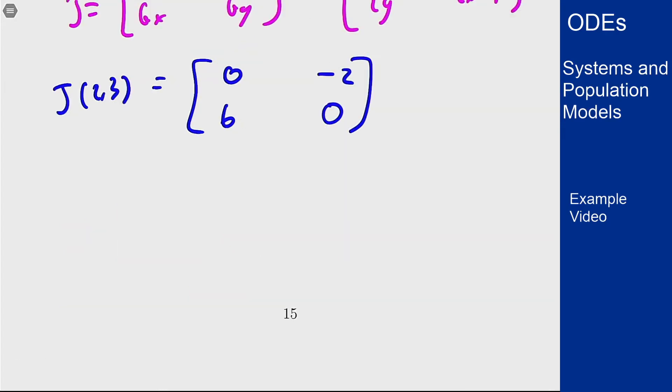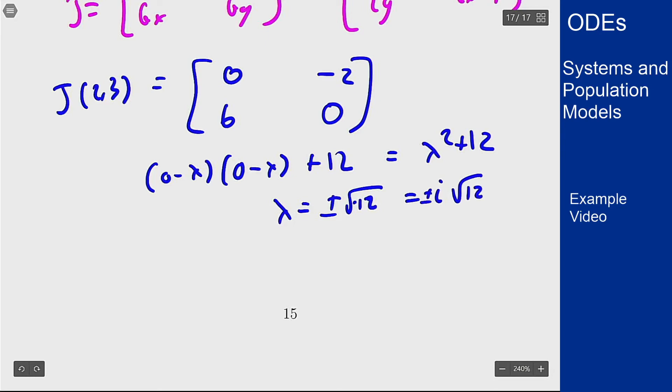Which we then find the eigenvalues here. This is going to be (0 - lambda) times (0 - lambda) plus 12, which is lambda squared plus 12. So the eigenvalues are at plus or minus square root of minus 12, or i square root of 12. These are purely imaginary eigenvalues, so this will be a center like expected.